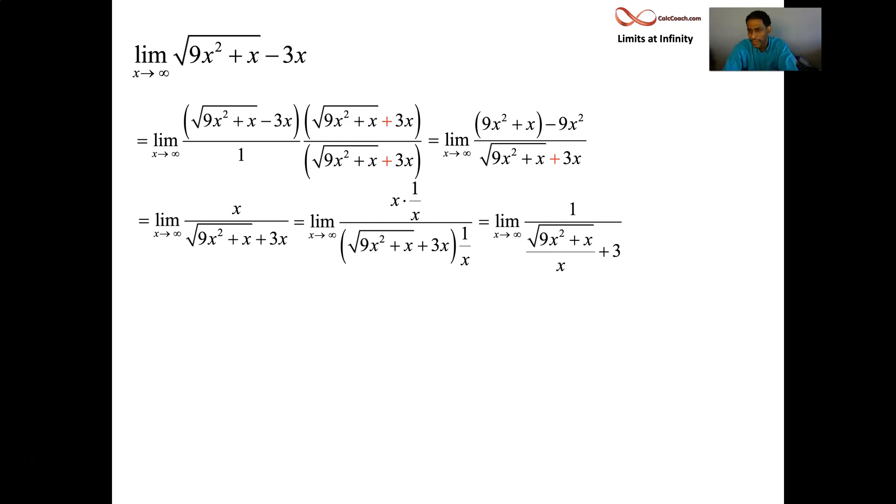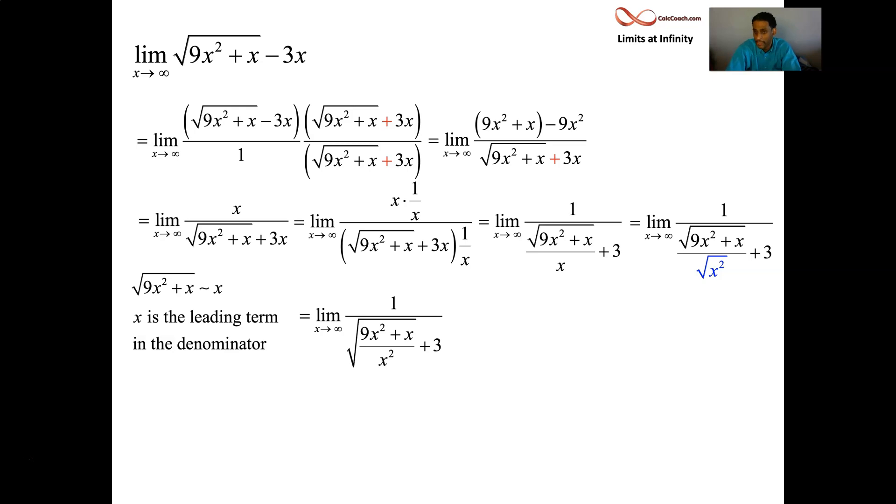And then you make them underneath one root. And then you split them up. It's 9 plus 1 over x. And then you write off that 1 over x. The final result is 1 over root 9 plus 3, or 1 sixth. Okay.